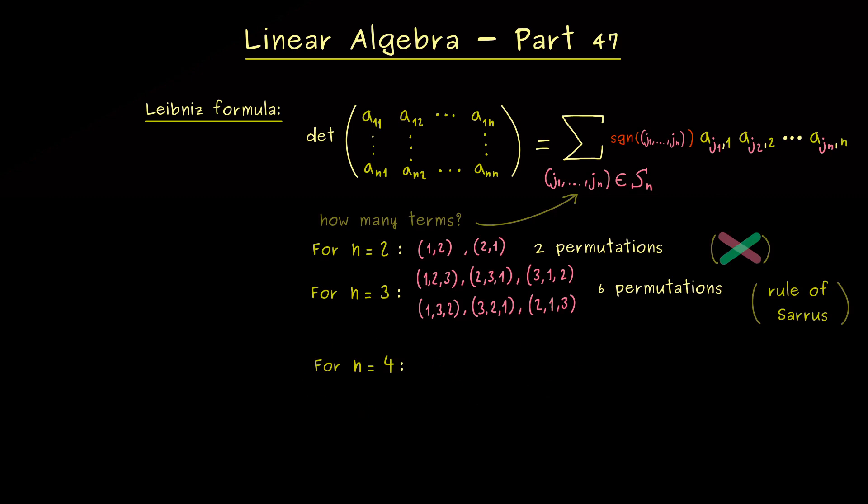Simply because we have way too many permutations now, because if you count them, you find 24. Indeed, you should recognize the general rule to count all the permutations is given by n factorial. So you see, the factorial comes in here very naturally. Moreover, then you should see the numbers here really explode if n increases. Therefore, simple rules to remember all the permutations only exist for n equals 2 and n equals 3.